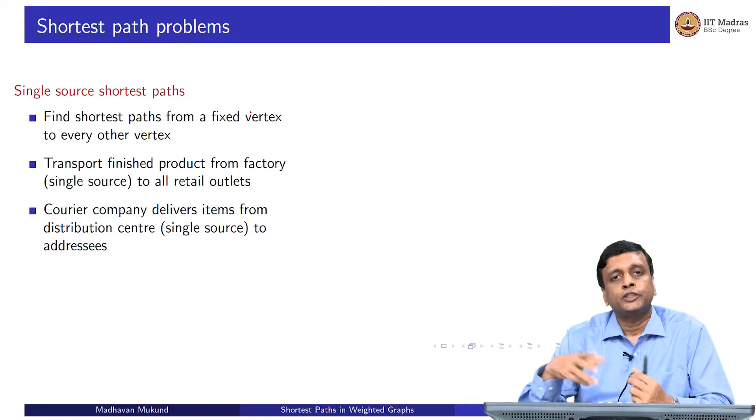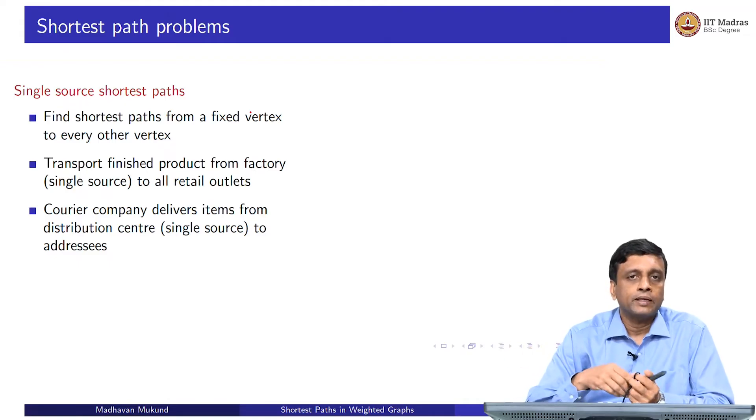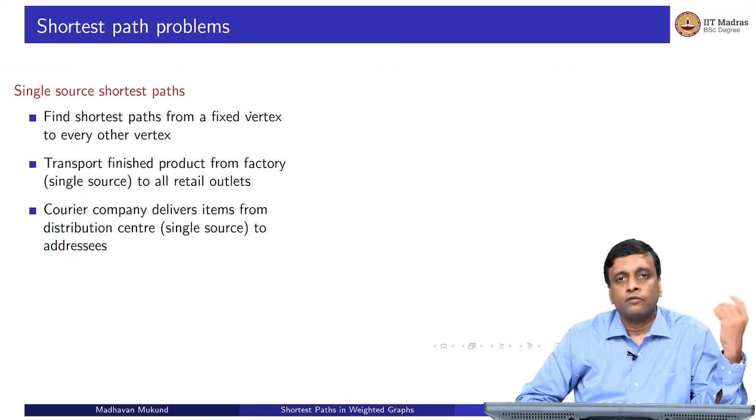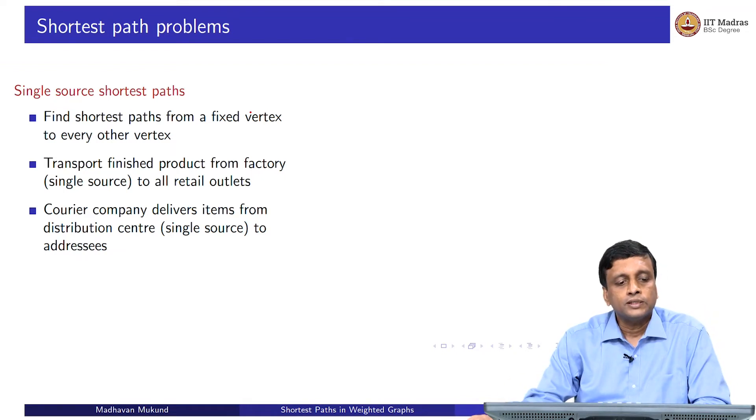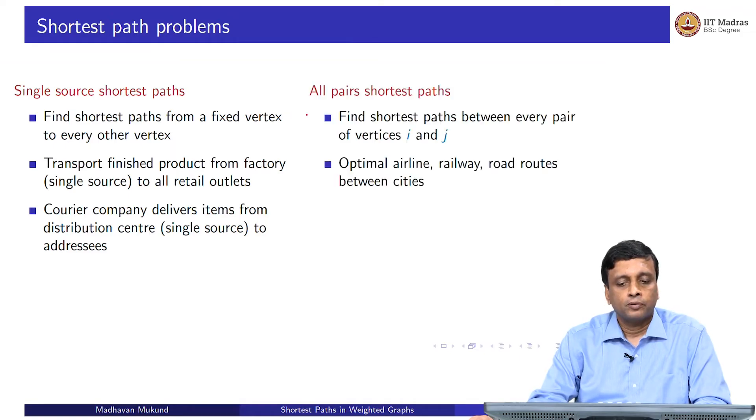This could be of interest, for instance, if you have a centralized facility, like a warehouse or a factory, from where you have to ship out things. What happens, for instance, when you get something by courier is that it arrives on a flight from a city, and it all gets dumped in some central office inside that city. Then from there, the courier company has to decide for each of the parcels how to send it out to your home. This now amounts to computing the shortest path from that courier facility to everybody's house. This is the single source shortest path problem.